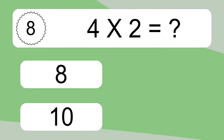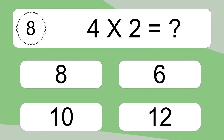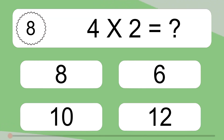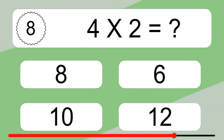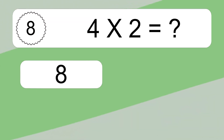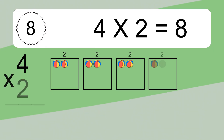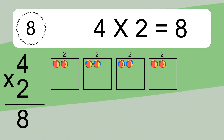4 times 2 equals what? 4 times 2 equals 8.